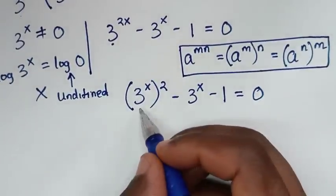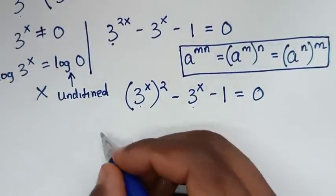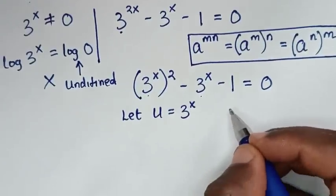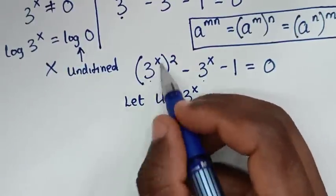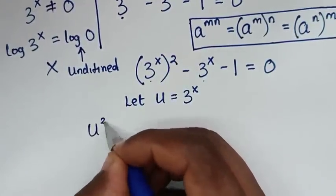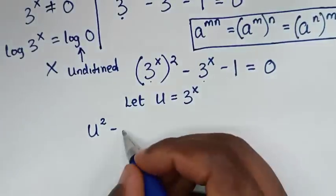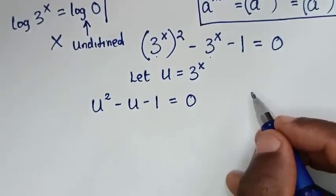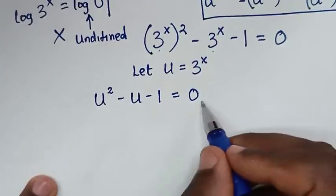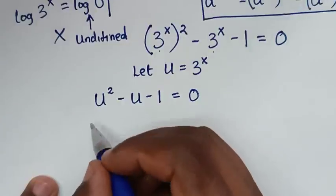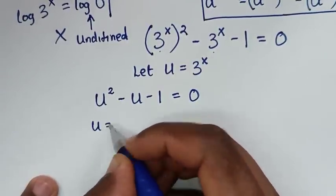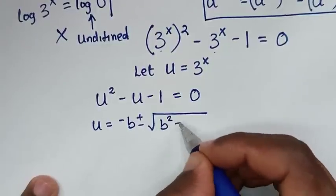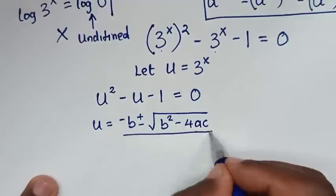Since 3 power of x is now common, let u equal 3 power of x. Then our equation becomes u squared minus u minus 1 equals 0. To find the value of u, we apply the quadratic formula: u equals negative b plus or minus square root of b squared minus 4ac, all over 2a.